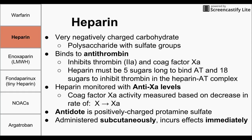Heparin has 5 sugars of its long carbohydrate chain that bind to antithrombin. If you have 18 sugars within a heparin, that's long enough to inhibit thrombin. So heparin alone with 5 sugars can bind to antithrombin, which has an inhibitory effect on factor Xa. If you have 18 sugars, you can inhibit thrombin by forming a heparin–antithrombin–thrombin complex. Heparin is a polymer and acts like a long chain that hugs antithrombin and thrombin together.